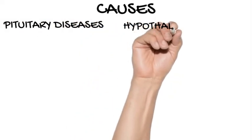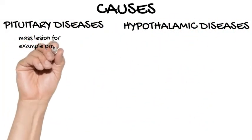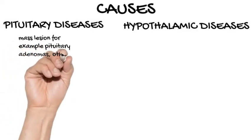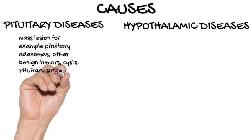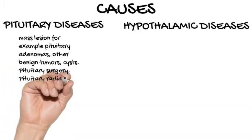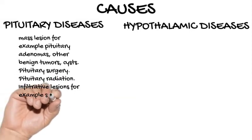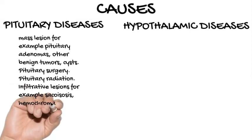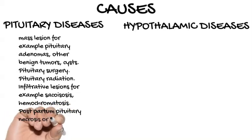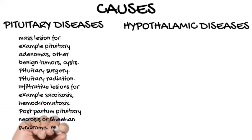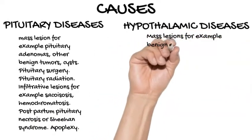Causes. Major causes of hypopituitarism can be divided into pituitary or hypothalamic diseases. Pituitary diseases include mass lesions such as pituitary adenomas, other benign tumors, and cysts; pituitary surgery; pituitary radiation; infiltrative lesions such as sarcoidosis and hemochromatosis; postpartum pituitary necrosis or Sheehan syndrome; and apoplexy.